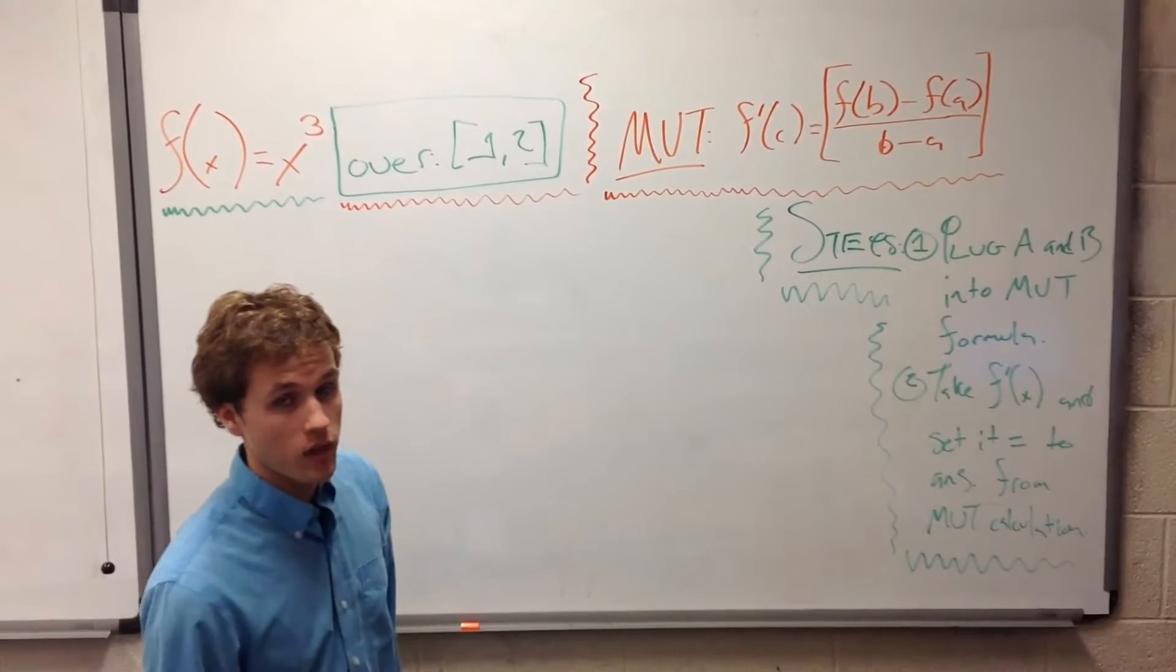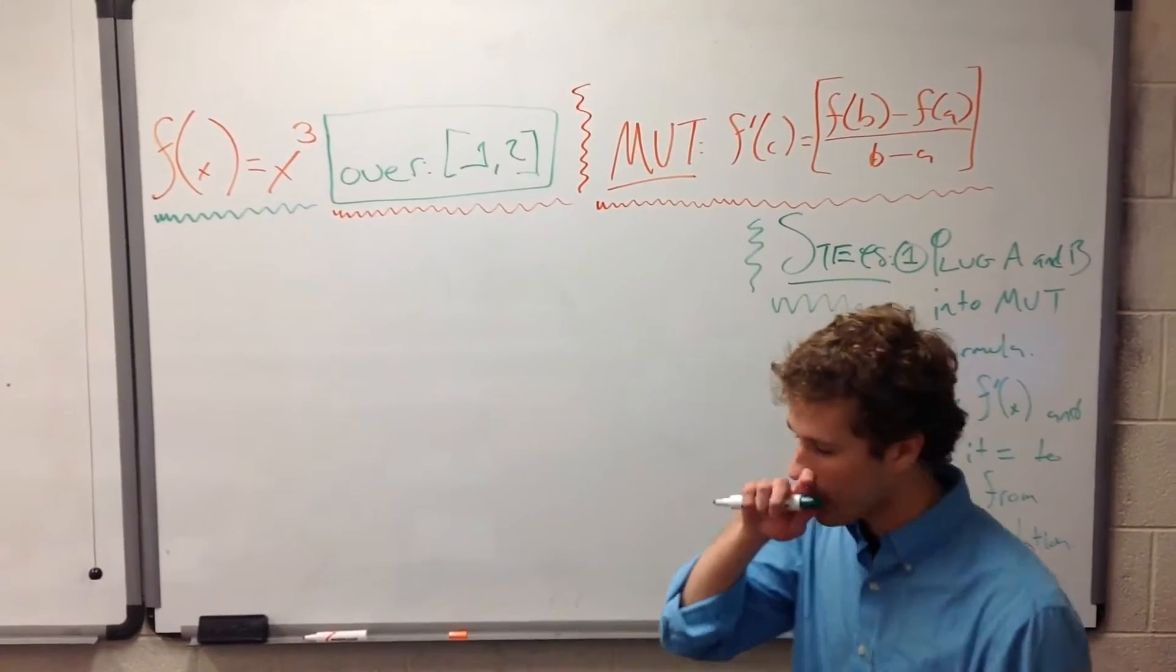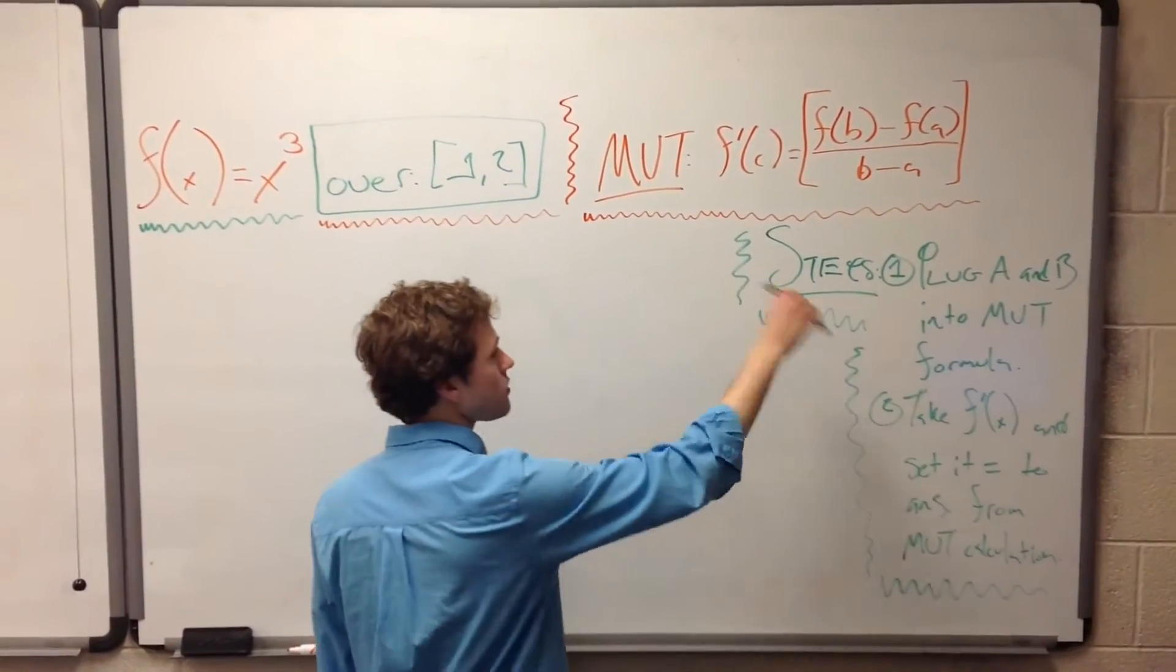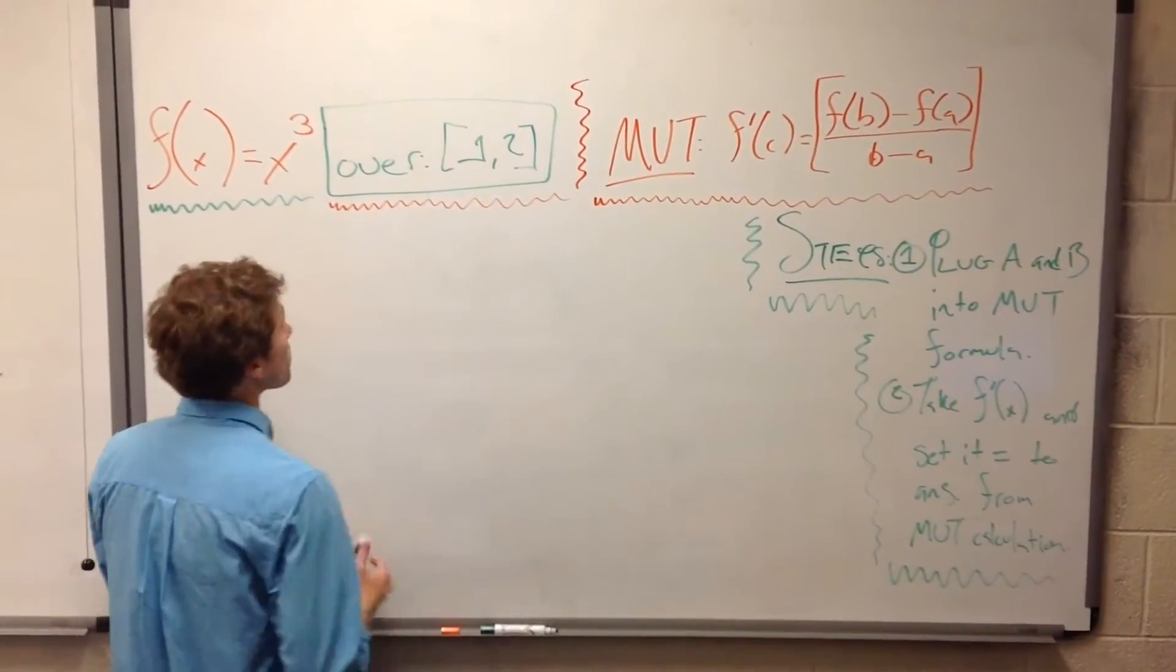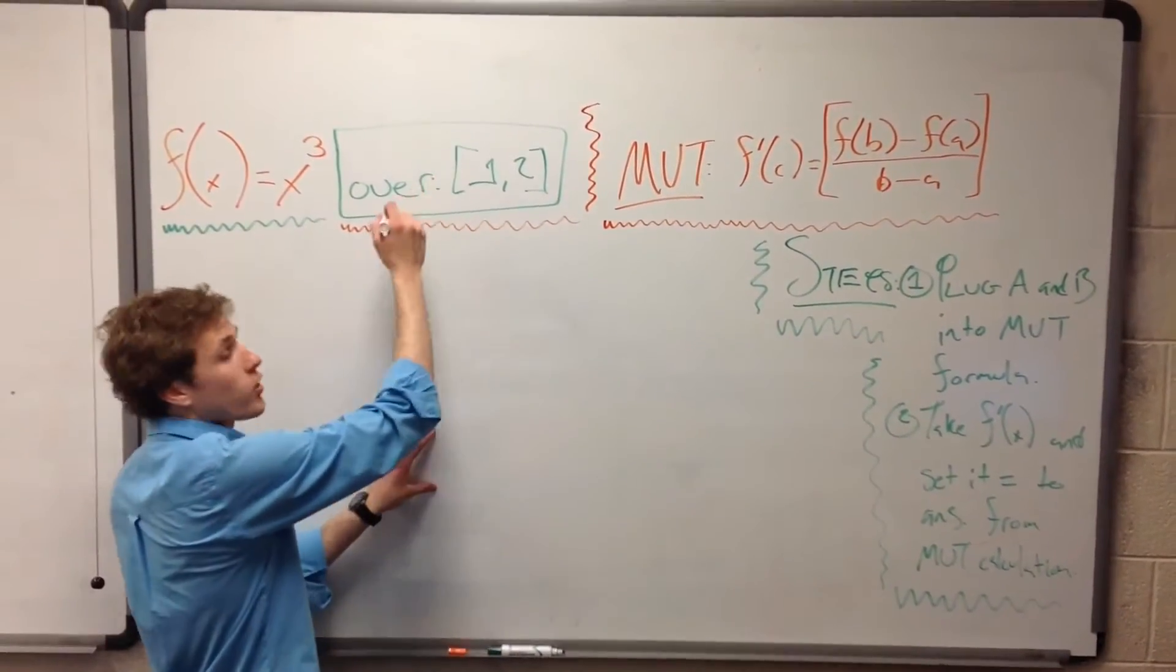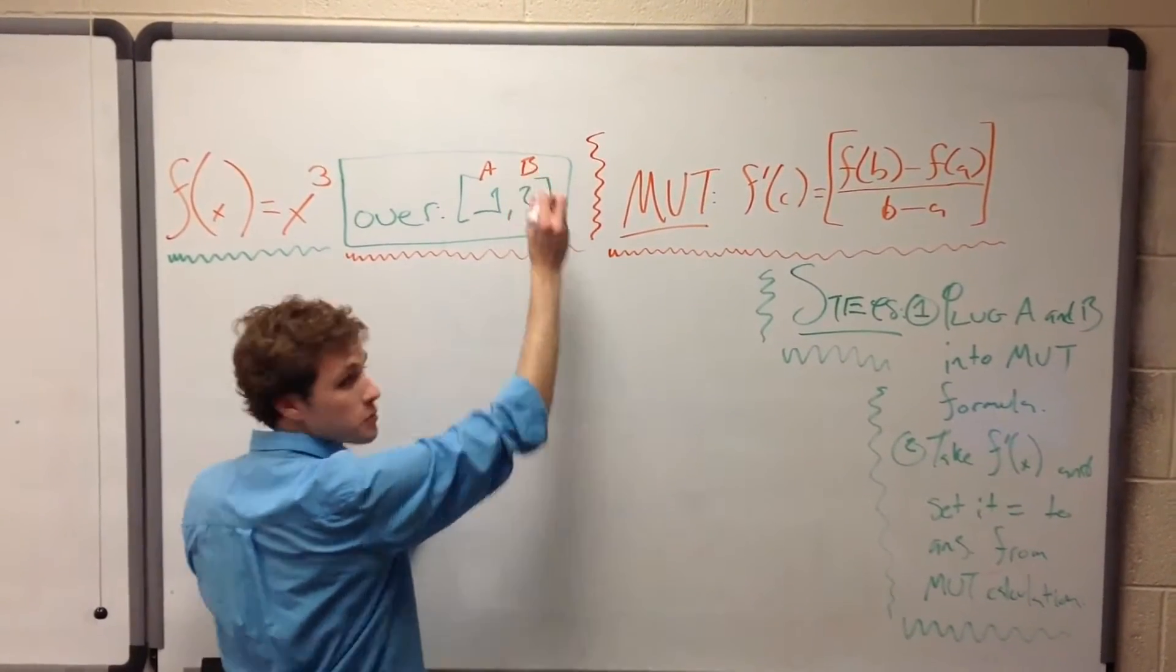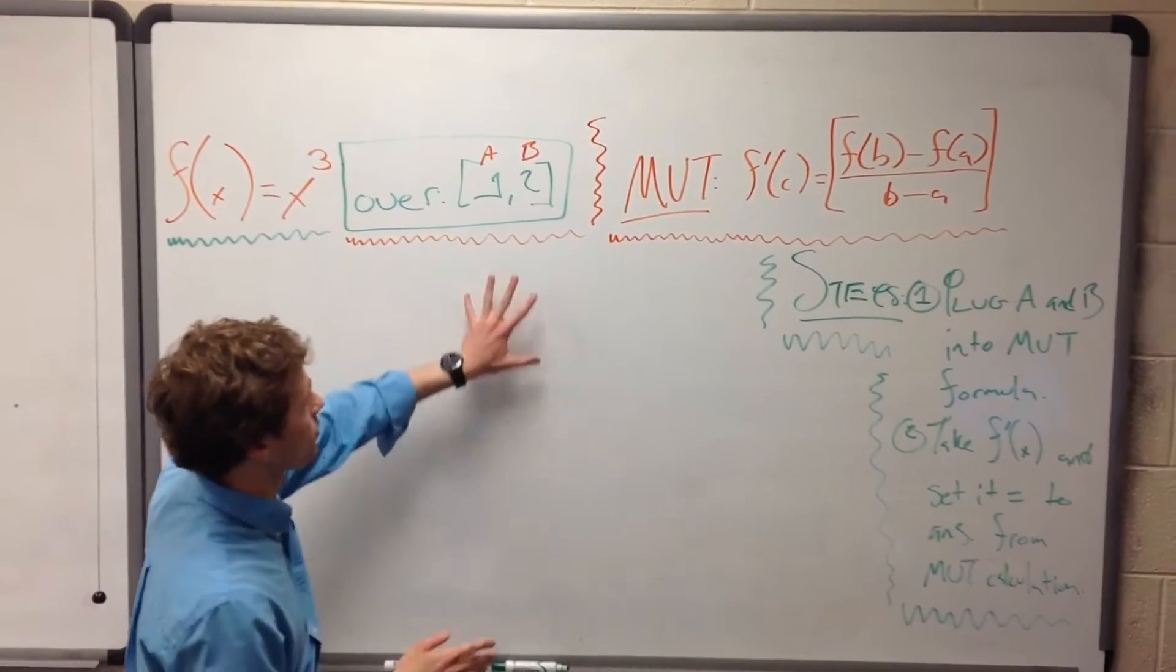The first thing we have to do every time we have a mean value theorem problem, there are two steps. The first step is to plug A and B into the mean value theorem formula. Of course, this A and B is referring to the parts of your interval. So this is A, and this is B, kind of self-evident. Alright, so let's go ahead and start plugging things in.